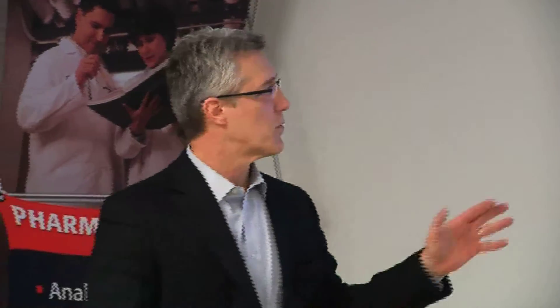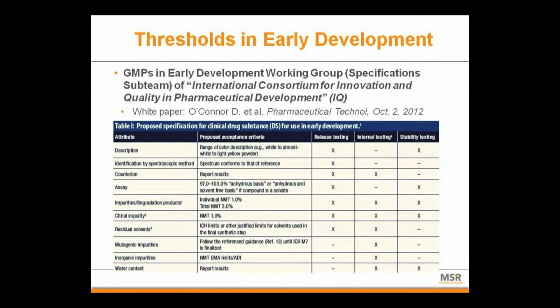I'll spend some time on this because there seems to be a lot of interest in the group with regard to early development. There's a working group — it's basically a science-based organization consortium involved with bringing science and regulation within the pharmaceutical industry. It's an international group. They have a GMP early development working group, and probably a lot of you know of this group. A lot of big pharma folks are part of it.